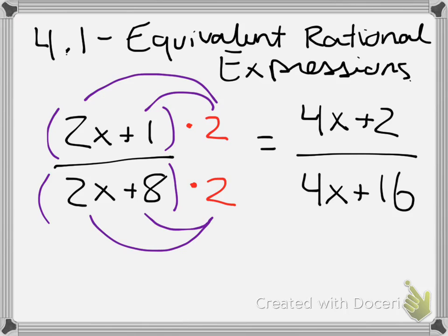Whatever we decide to multiply it by, in this case we did 2, it has to get distributed to every term. The other thing we have to remember is that whatever we multiply in the numerator also has to be multiplied in the denominator. So that's one type of equivalent rational expression, where we're making it bigger by multiplying.